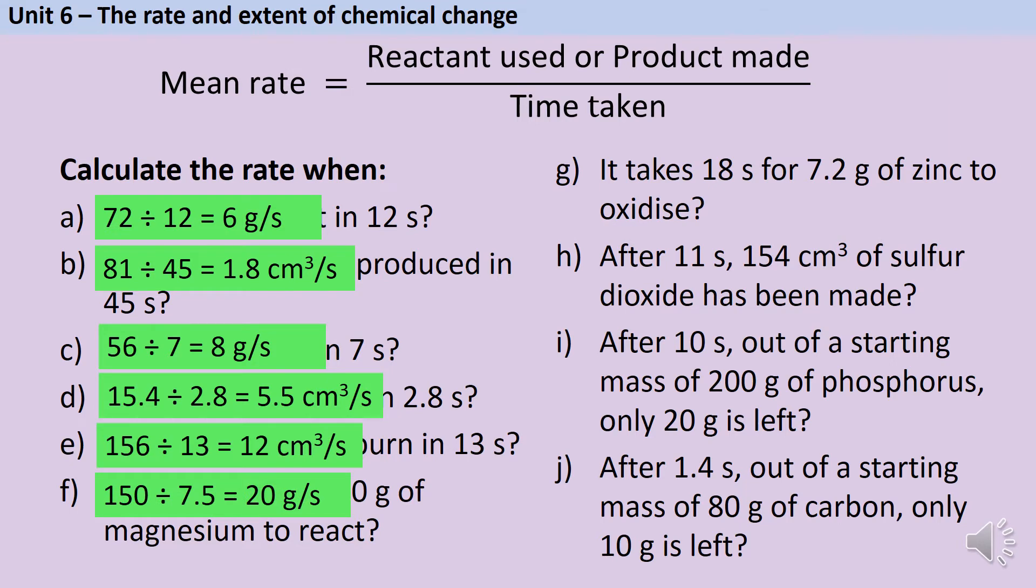Hopefully you've spotted in that one that the mass and the time were the other way around. If it takes 18 seconds for 7.2 grams of zinc to react, that's a rate of 0.4 grams per second. If after 11 seconds, 154 centimetres cubed of sulphur dioxide has been made, that's a rate of 14 centimetres cubed per second.